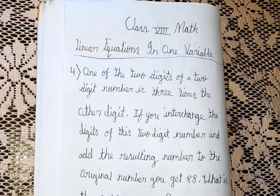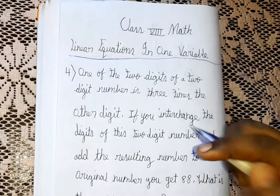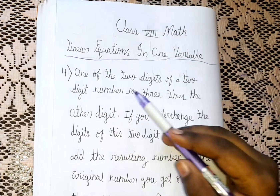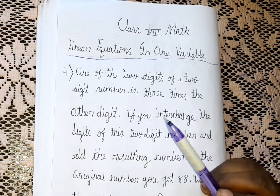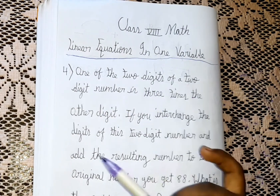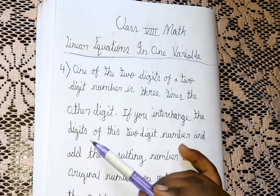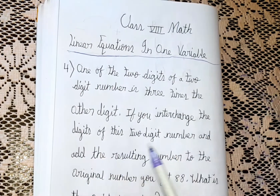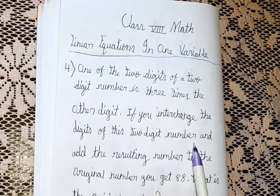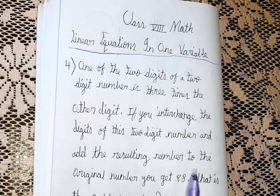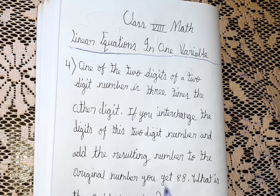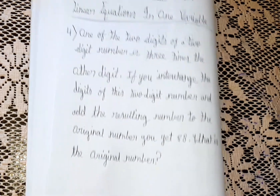So guys, let's read the question: One of the two digits of a two-digit number is three times the other digit. If you interchange the digits of this two-digit number and add the resulting number to the original number, you get 88. What is the original number?